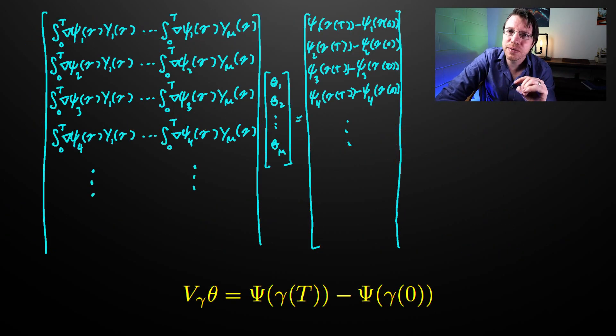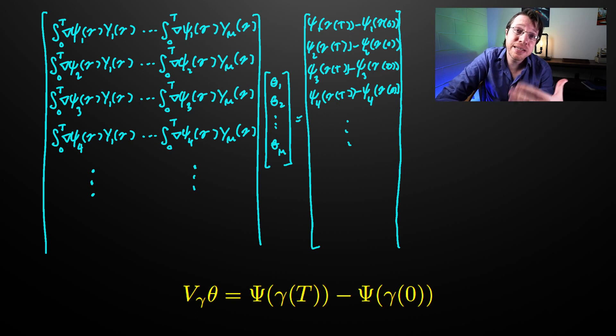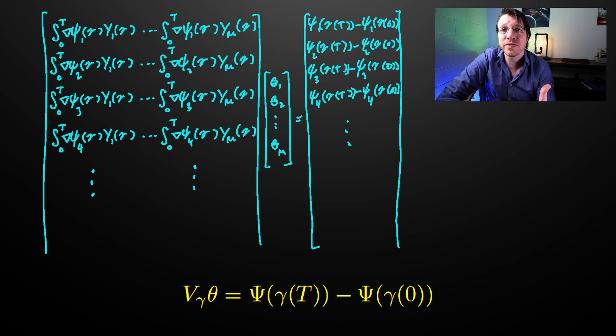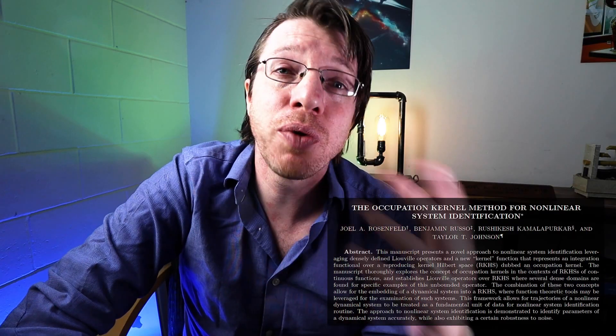This Hilbert space is completely data-driven and comes from the trajectories we have actually observed. More details on parameter identification are on my YouTube channel. I would love to get into dynamic mode decomposition, but we're running out of time — I have an entire playlist on my YouTube channel dedicated to DMD and the neat tricks you can do with operators in the system identification framework. Thank you for watching, and if you have any questions, I'm here to answer them.